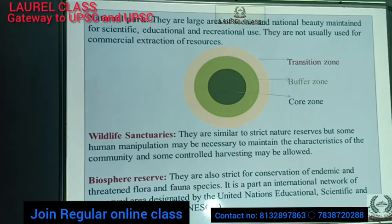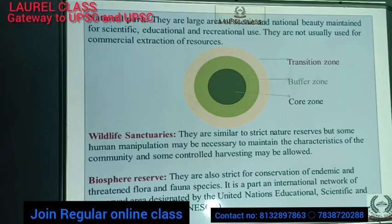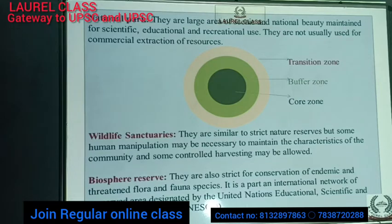Any protected area has three zones: core zone, buffer zone, and transition zone. The core zone is a fully restricted area for any kind of human activities. The buffer zone is slightly restricted — tourists can go there and research activities can be conducted. The transition zone, or outer zone, is where fringe area villagers live, and they can extract plant and tree resources, do farming, and other human activities.